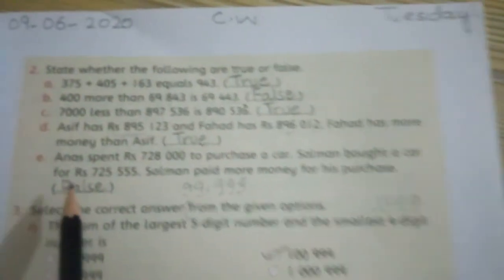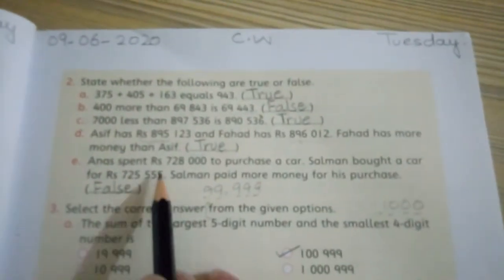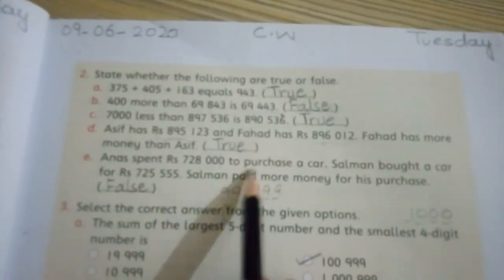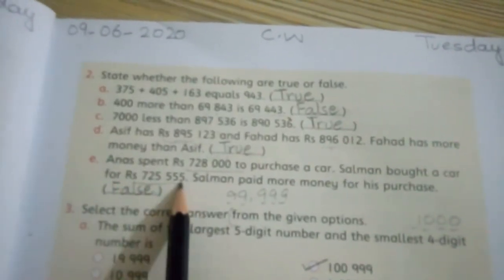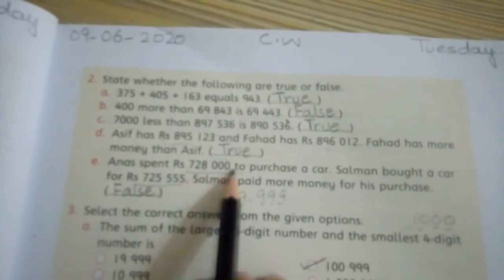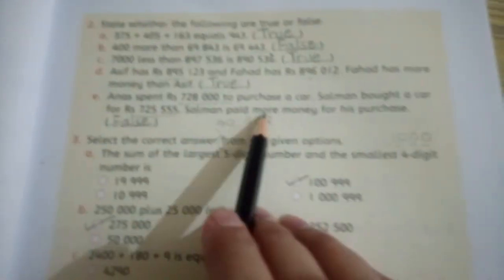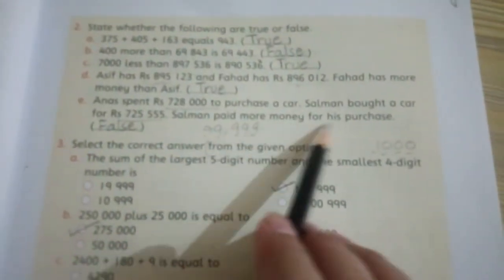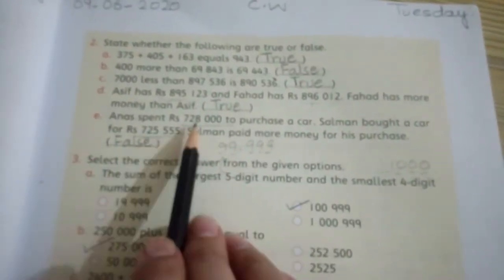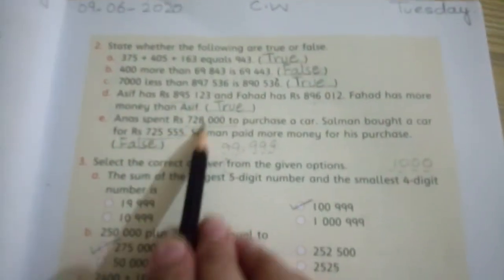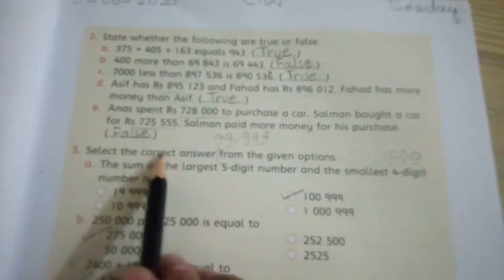Part E: Anis spent seven hundred twenty eight thousand to purchase a car. Salman bought a car for seven hundred twenty five thousand. The statement says Salman paid more money for his purchase, but 725 is less than 728, so Anis spent more. This statement is false.